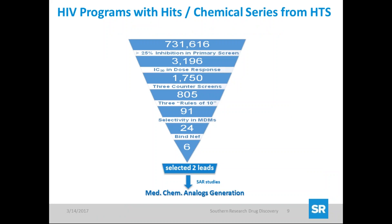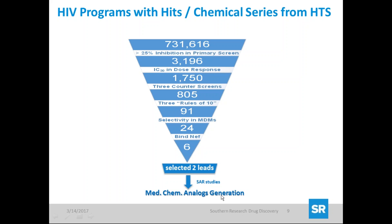For an HIV program at Southern, not affiliated with ADDA, we ran almost our whole high-throughput screen of 700-plus thousand compounds. We used 25% inhibition as the cutoff, which led us to 3,000 compounds, then IC50 determination got us to 1,700. Counter screens, rule of ten, selectivity, binding affinity — we ended up with six compounds. We selected two leads, and I'll show you how we optimized those compounds to be potent. It's quite an intense pathway.